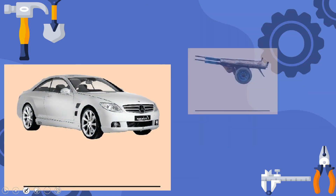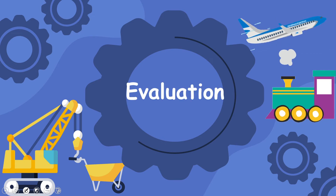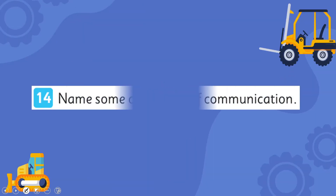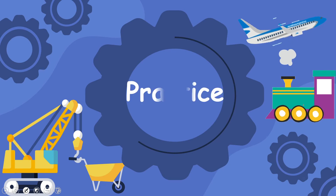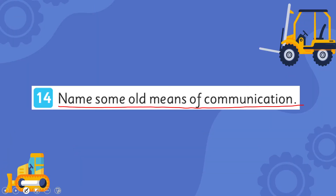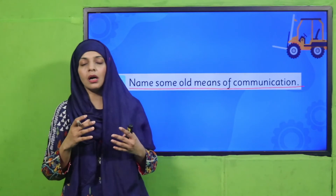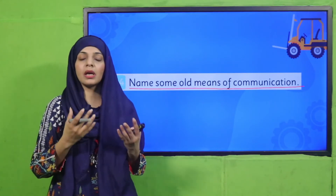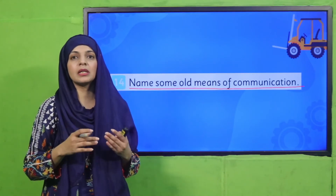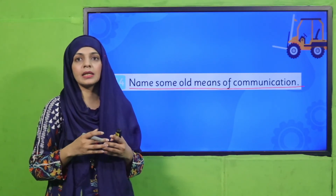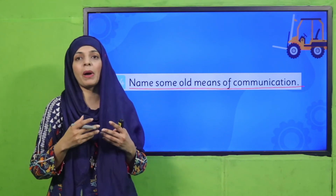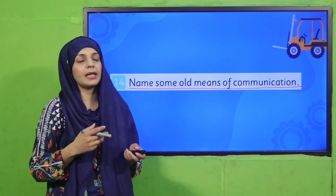For evaluation: name some old means of communication. Old means of communication included pigeons — people used to send letters through them — and smoke signals. People wrote letters too. But nowadays, email and mobile phones have replaced them.